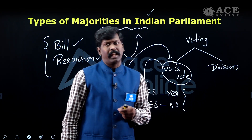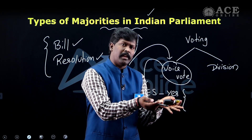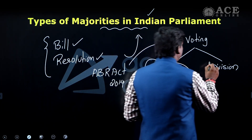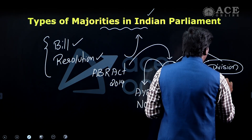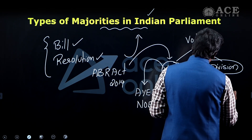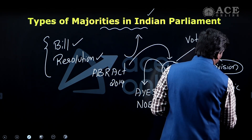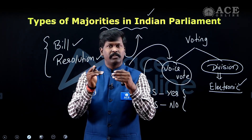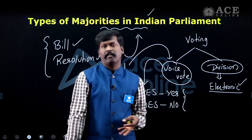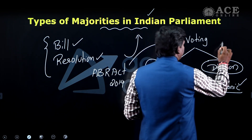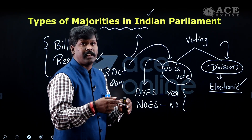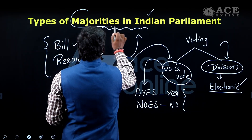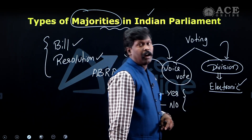In a voice vote, when the result is almost 50-50, the Speaker calls for a division vote. The division vote is done through electronic voting, where members record their vote as Ayes, Noes, or Abstain, and total votes are counted. This is the electronic division voting procedure.